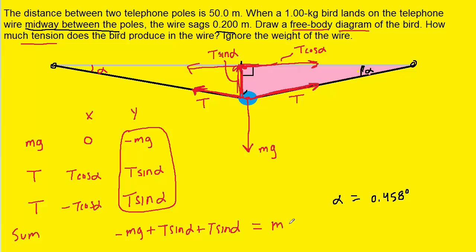After summing those forces, what we do is set that equal to the mass times the acceleration. The acceleration of the bird is actually zero because it's just standing there on the wire. So if we plug zero in for the acceleration and multiply it by the mass, we're going to end up with zero on the right hand side.